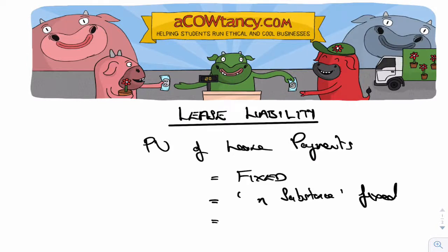The lease liability is the present value of lease payments. Fixed payments go into it, as well as those unavoidable in substance fixed payments. What else goes into the lease liability?